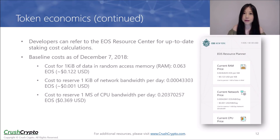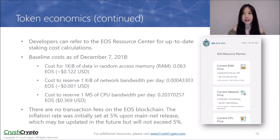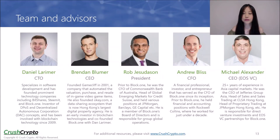The baseline costs as of December 7 are outlined on this slide. This token model is unique to EOS and differs from other smart contract platforms such as Ethereum — for Ethereum, Ether is used to pay transaction fees and upfront costs of deploying smart contracts for dApps. There are no transaction fees on the EOS blockchain, which means that 21 block producers receive compensation solely from newly minted tokens in each block. The inflation rate was initially set at 5% on mainnet release and will not exceed 5%. EOS is an open-source free platform released by BlockOne, which was founded in early 2017 and is registered in the Cayman Islands but operates out of Hong Kong, Los Angeles, and Virginia.